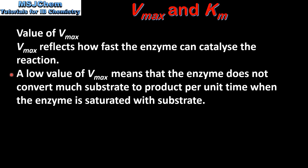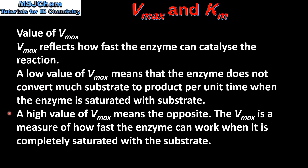A low value of Vmax means the enzyme does not convert much substrate to product per unit time when the enzyme is saturated with substrate. A high value of Vmax means the opposite. Vmax is a measure of how fast the enzyme can work when it is completely saturated with the substrate.